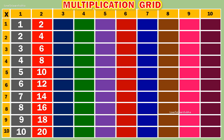Table of 3. 3 1s are 3. 3 2s are 6. 3 3s are 9. 3 4s are 12. 3 5s are 15.